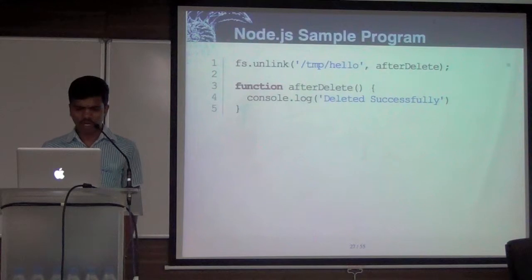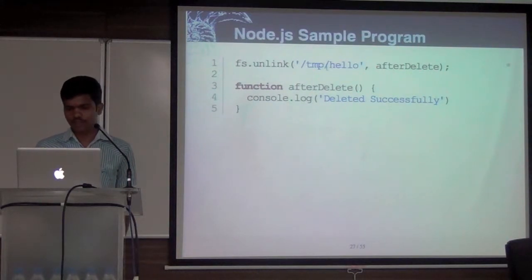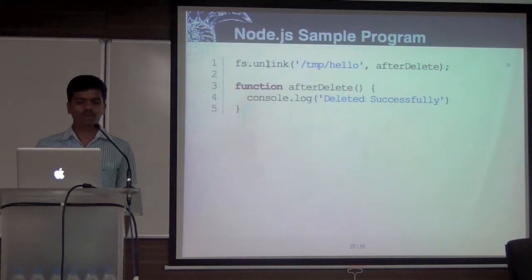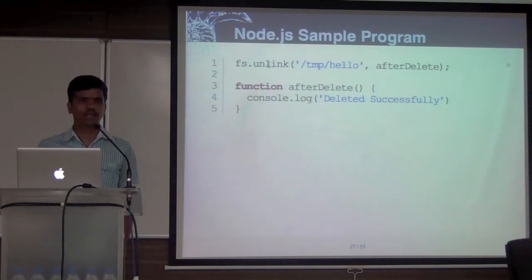This is a sample program which explains event-driven programming. The first line — I'm deleting a file: fs.unlink. I'm passing the file to be deleted. The second argument is the callback. Typically what we would do is call fs.delete on some file and forget it — the next line executes after the file is deleted. But in the evented world, everything is postponed into a queue.